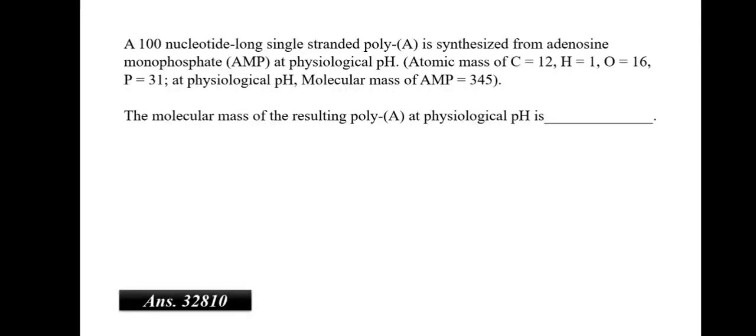A hundred nucleotide long single-stranded poly A is synthesized from adenosine monophosphate at physiological pH. The molecular mass of resulting poly A at physiological pH is. So, we know that there will be 100 molecules of AMP. So, we have to multiply this 100 into 345. We also know as we add two molecules, a water molecule would be released. 99 such water molecules would be released. So, we subtract this 34500 by 1782 which is what we get. And then the answer would be about 32718.